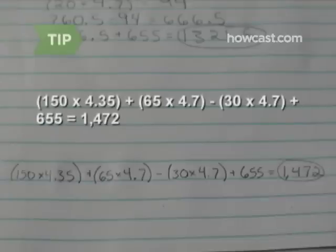For example, a 150-pound woman who is 65 inches tall and 30 years old would have a basal metabolic rate of 1,472.